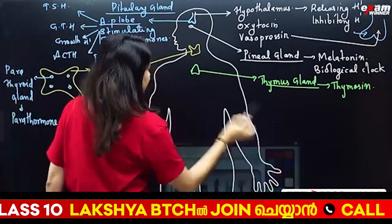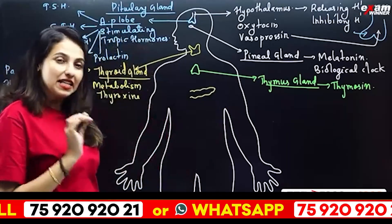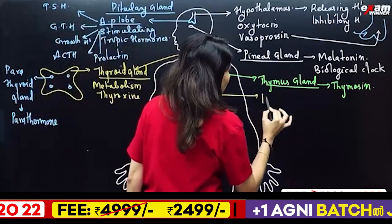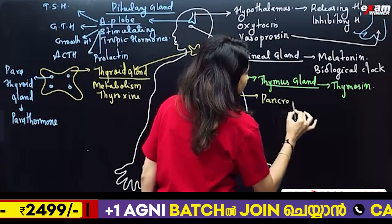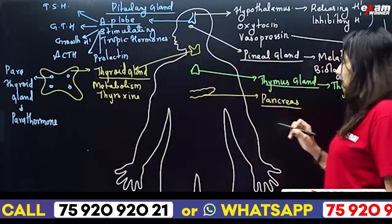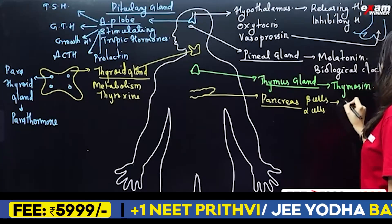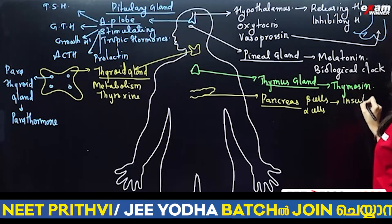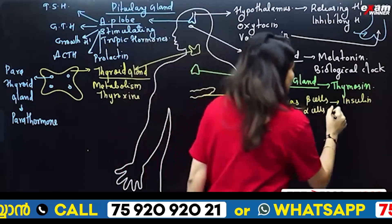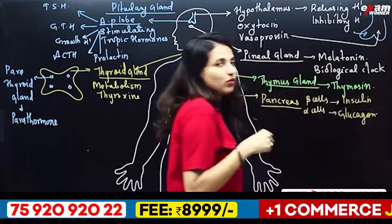Then we have the pancreas gland. The pancreas produces both enzymes and hormones. There are two types of cells in the pancreas: beta cells and alpha cells. Beta cells produce insulin, which lowers our blood glucose level. Alpha cells produce glucagon, which raises the blood glucose level.